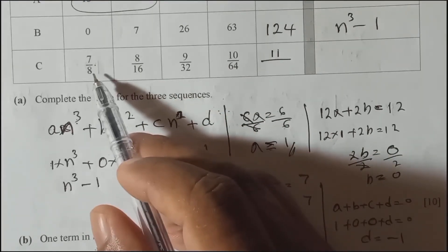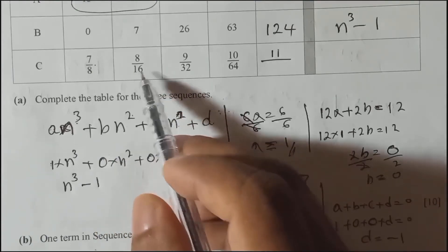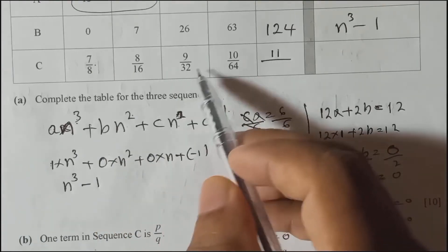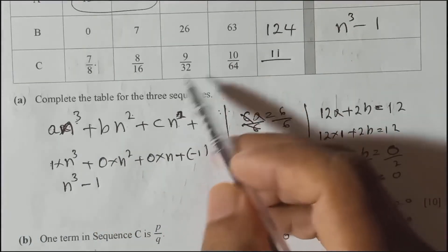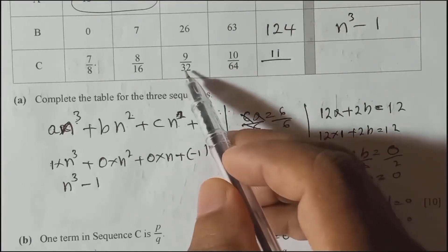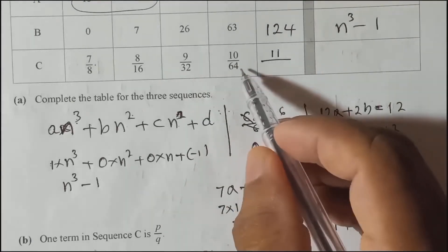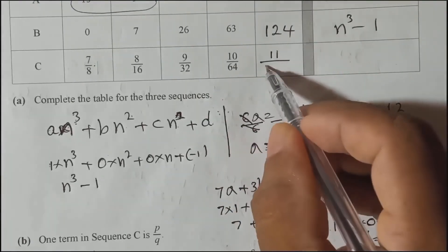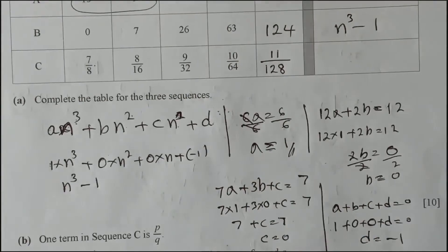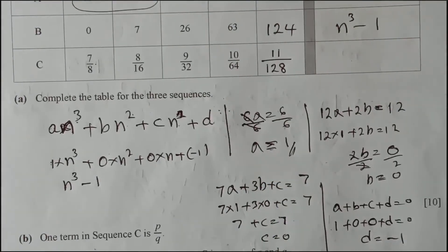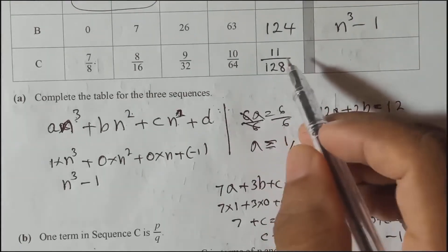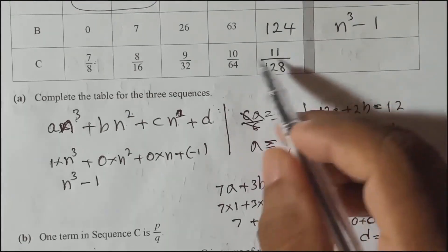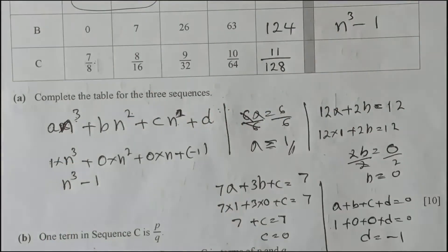The denominators form a geometric progression — always multiplied by 2: 8, 16, 32, 64. So multiplying by 2 gives the next term, meaning the common ratio is 2. Therefore the fifth term denominator is 64 × 2 = 128. So the fifth term of sequence C is found.